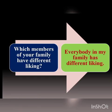The next question asks: Which members of your family have different liking? Well, everybody in my family has different liking. Taste varies according to the taste buds. In a family of four members, each individual shall have different tastes. My mother has different tastes from my father, and I have a different taste from my brother. So definitely everybody in my family has different liking.